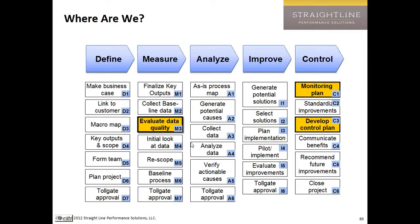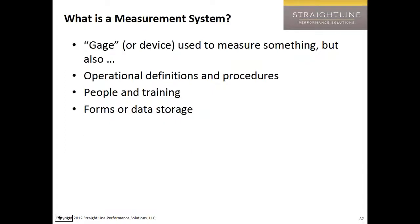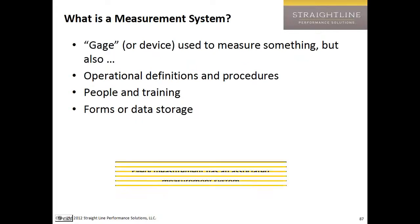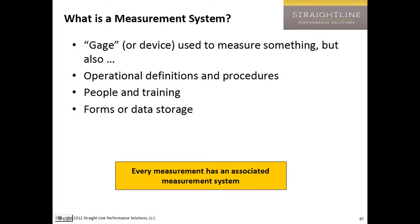Here are some places where this is going to come in handy in a Six Sigma project. A measurement system is any device used to measure something — it could be a flow meter or a ruler. But it also includes all sorts of other things: people, documentation, definitions of what the measurements are, how they're done, any procedures, how the data get uploaded to a database — all sorts of stuff. The system involves all of those things.